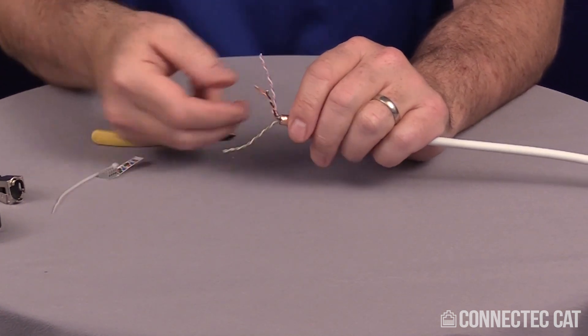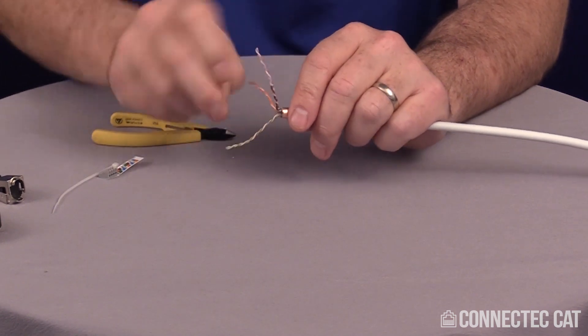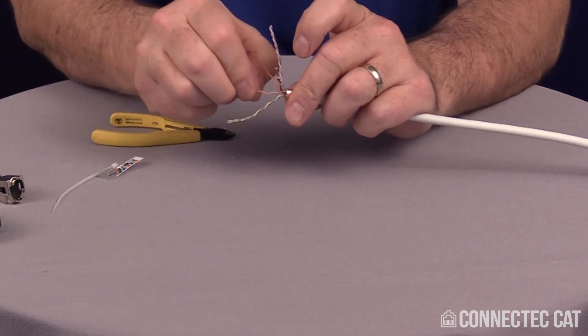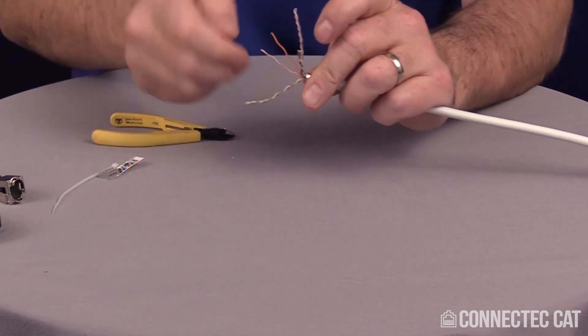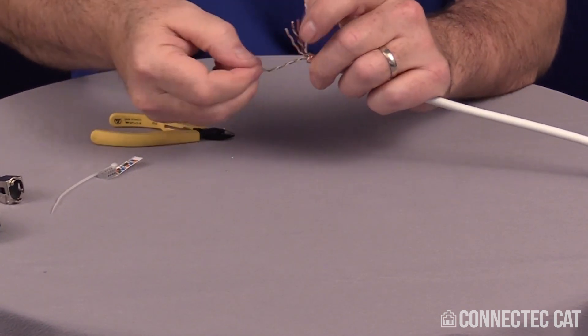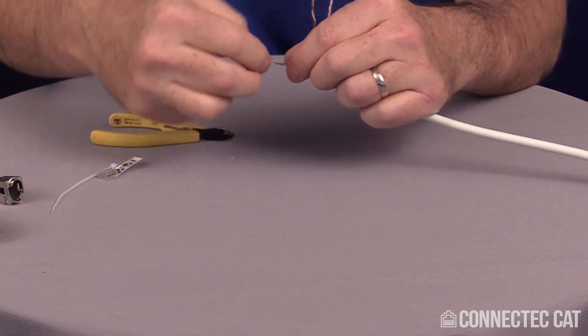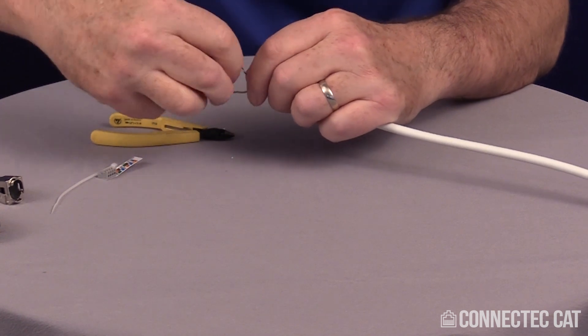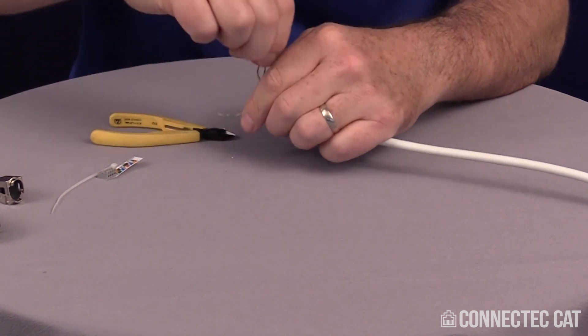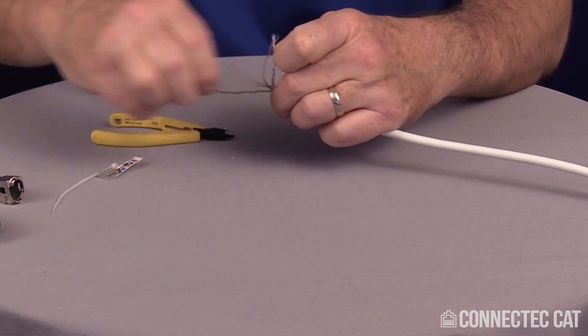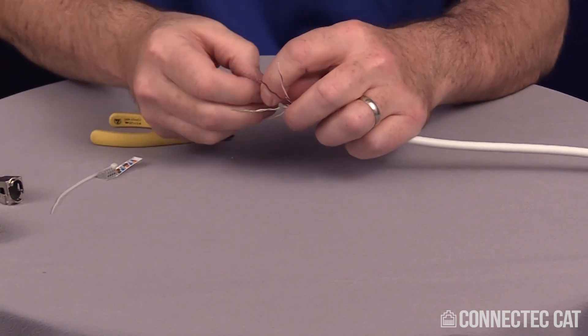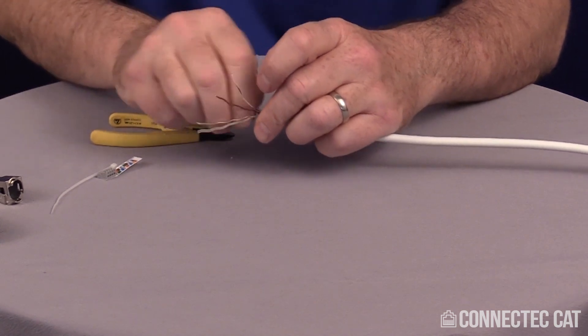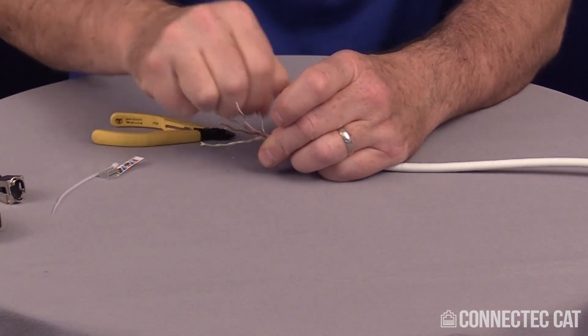Next step is to untwist your pairs. This is probably the longest step of the whole process. You can do it many different ways. You can use the slug of the cable jacket to do it. There's tools out there that will help you separate the pairs also. I'm giving a few tugs on each conductor after I untwist them to smooth out the convolutions from the twisting. You'll notice the color coating on this cable is a little dim. This is a plenum rated cable made out of Teflon. Teflon does not accept color very well.